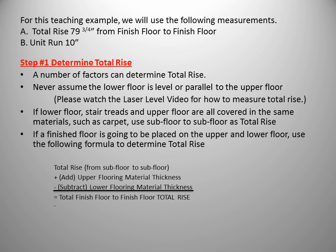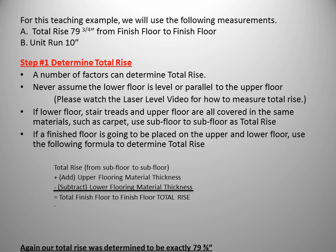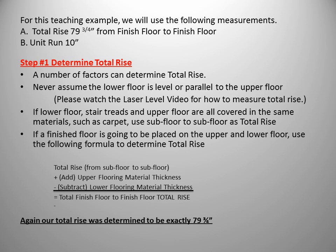If, however, a finished floor is going to be placed on the upper and lower floors using different materials, we use the following formula to determine total rise. We start with the rise from subfloor to subfloor, which we can measure using the laser level, and then we make an adjustment. We add the thickness of the flooring material on the upper floor and subtract the thickness of the flooring material on the lower floor. This gives us our total finished rise from finished floor to finished floor. Our total rise for this example is exactly 79 and 3 quarters of an inch.